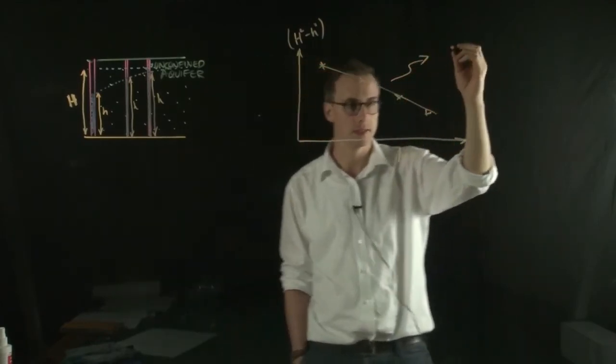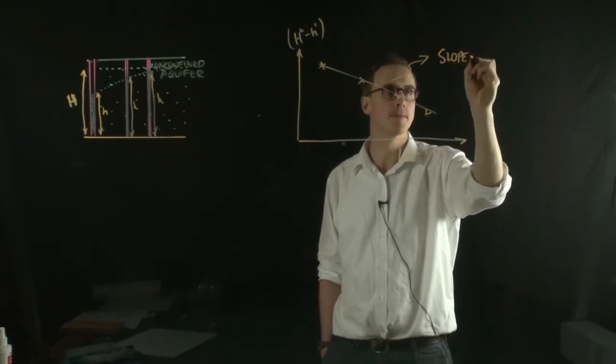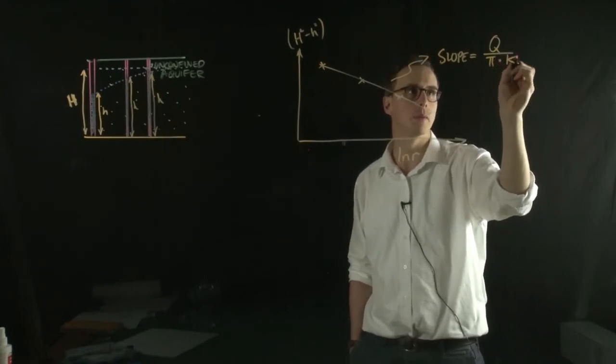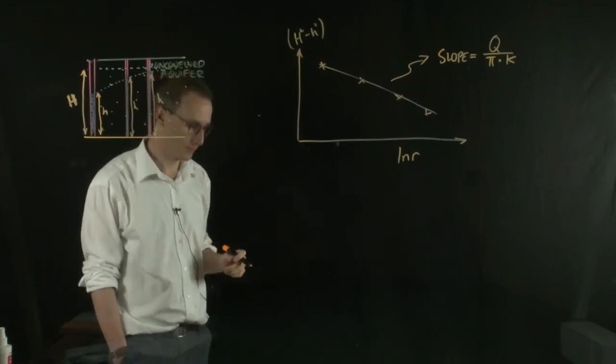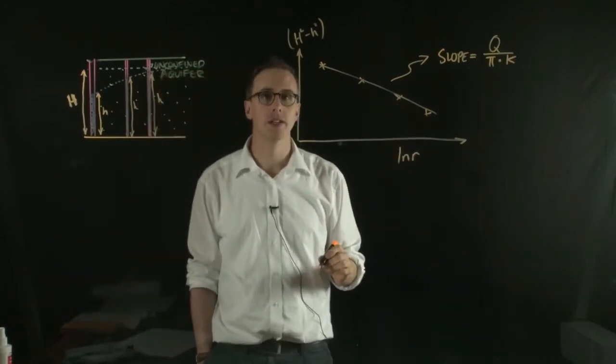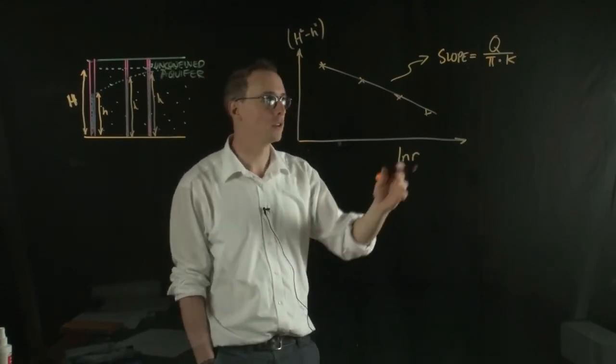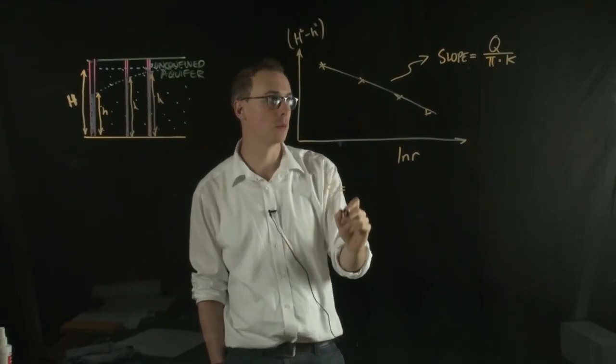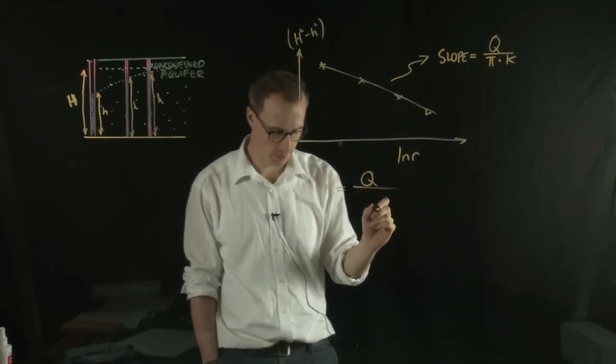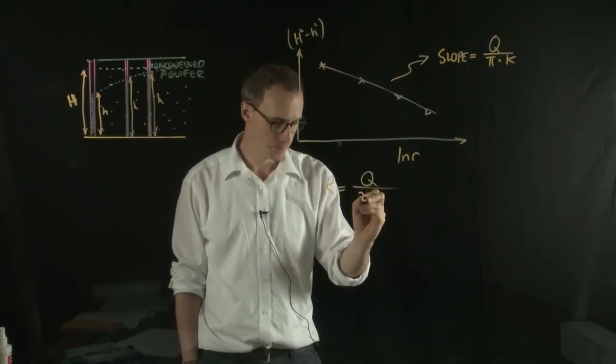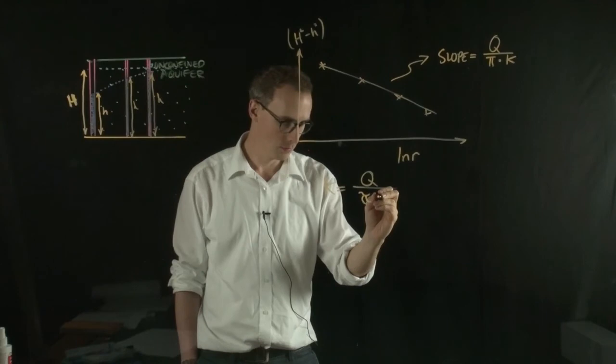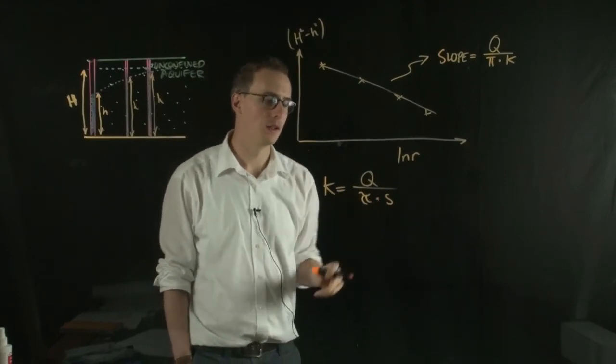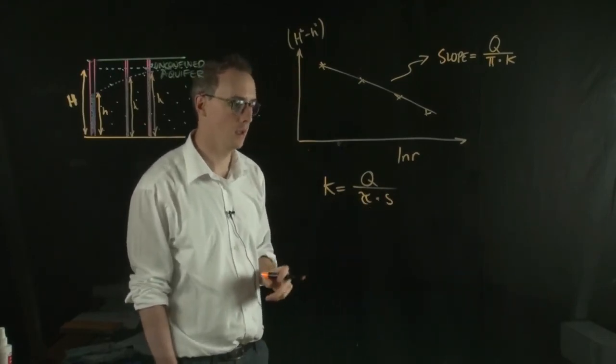And the slope of that straight line is equal to Q over π times the permeability. So we now have got an equation. Again, similar principles to the confined aquifer. We can rearrange to find the permeability. So the permeability would be equal to the flow divided by π times the slope of this graph.